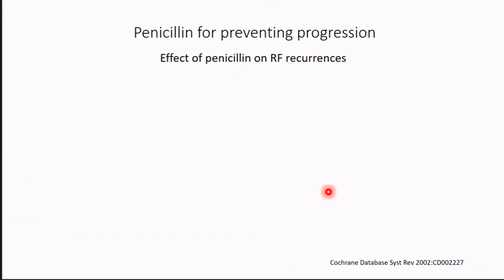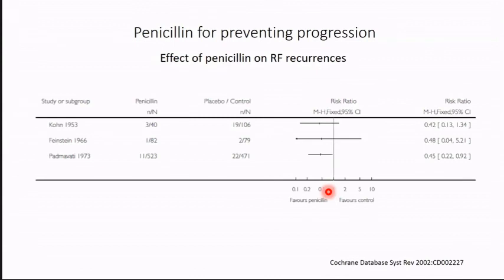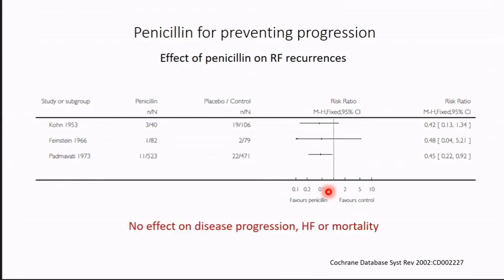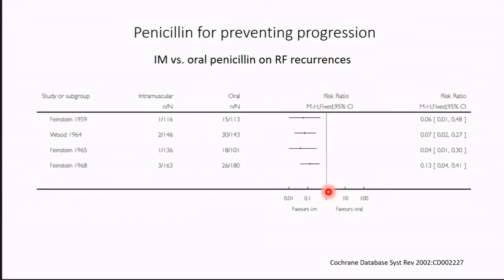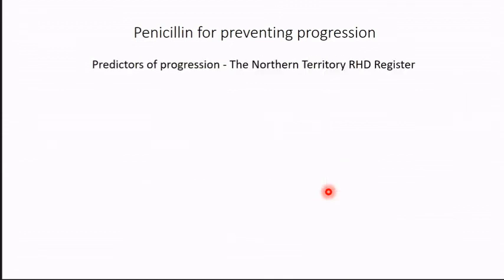The effect of penicillin on ARF recurrences has not been very well studied. There are just about three quasi-randomized trials done in America, and one was done in India — which lost about 25% of patients to follow-up. Although there was some trend toward reduction in recurrence, there was really no impact on disease progression, heart failure, or mortality. Similarly, studies of intramuscular versus oral penicillin show an impact on RF recurrences, but none on disease progression or mortality.